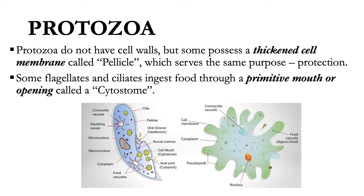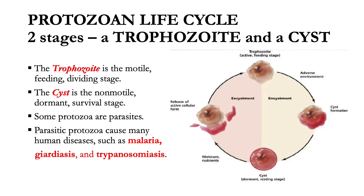Protozoa do not have cell walls, but they possess a pellicle which serves the same protective purpose. Some flagellates and ciliates ingest food through a primitive mouth or opening called a cytostome. A typical protozoan life cycle consists of two stages: the trophozoite stage, which is the motile, feeding, and dividing stage, and the cyst stage, which is the non-motile, dormant, survival stage.